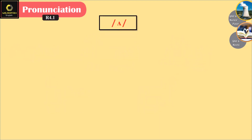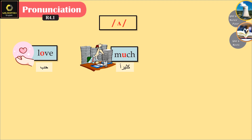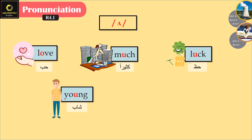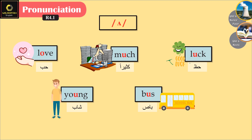The next sound is /ʌ/. Listen and repeat: love, much, luck, young, bus. This is the short vowel sound for the letter U. Let's listen again: love, much, young, bus.